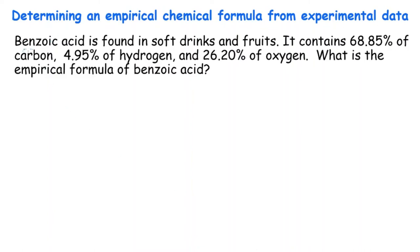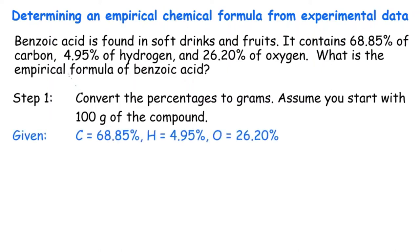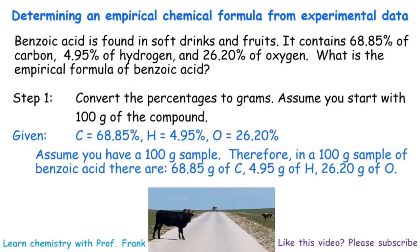Let's work on this problem. Benzoic acid — easily found in soft drinks and fruits — contains 68.85% carbon, 4.95% hydrogen, and 26.2% oxygen; those add up to 100%. What is the empirical formula? Start with step 1: assume 100 grams. Then the percentages simply become 68.85 g of carbon, 4.95 g of hydrogen, and 26.2 g of oxygen. If grams are already given in the problem, you can skip step 1.